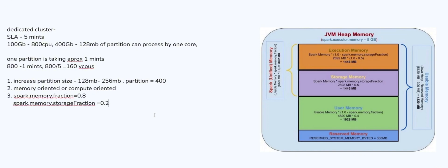The next thing is to change your shuffle partition bytes. You can use spark.sql.files.maxPartitionBytes and set it to approximately 256 MB. Since you have changed your partition size, instead of the default 128 MB you can increase this value to 256 MB, so that it will consider 256 MB of data as one particular block.